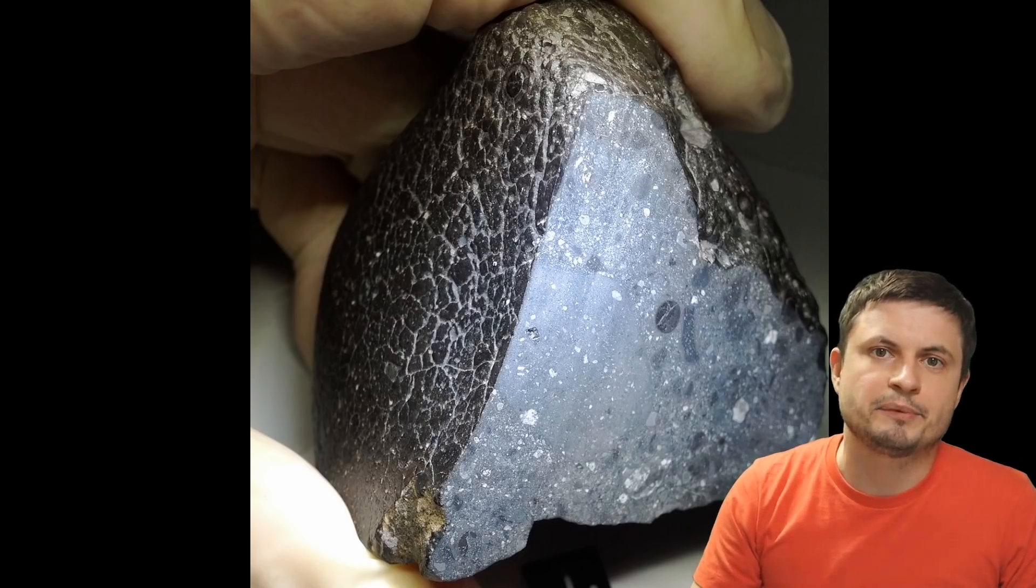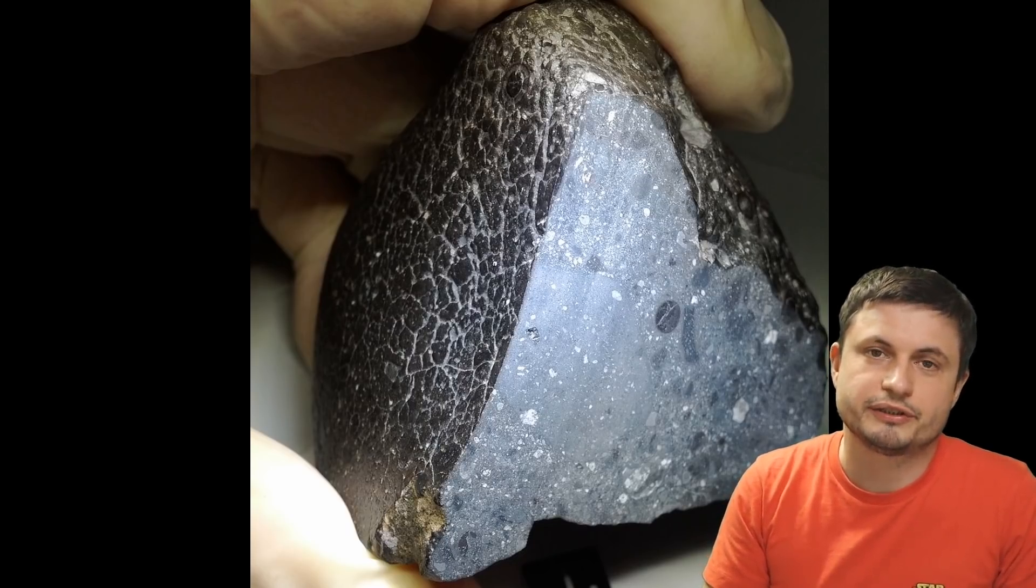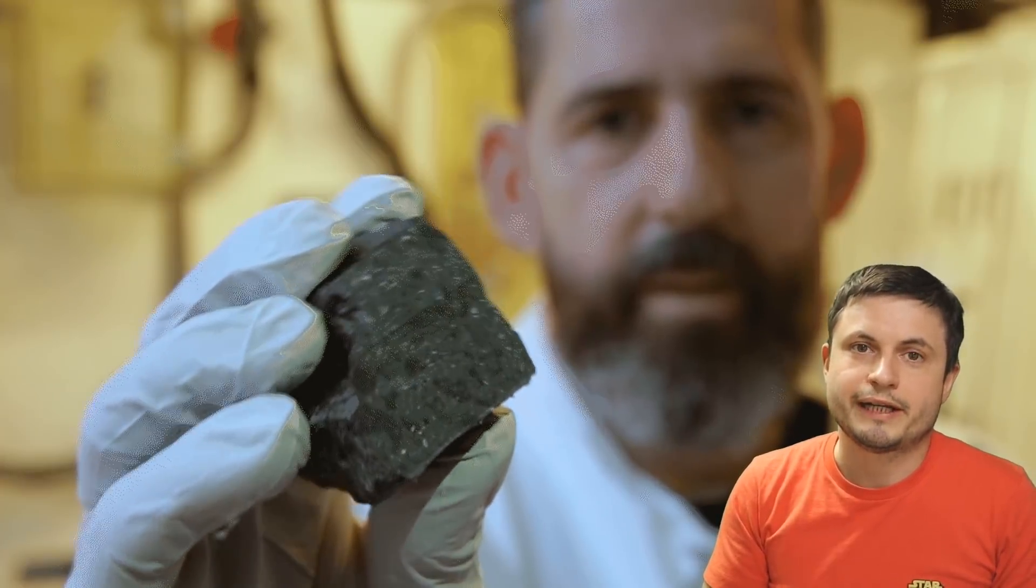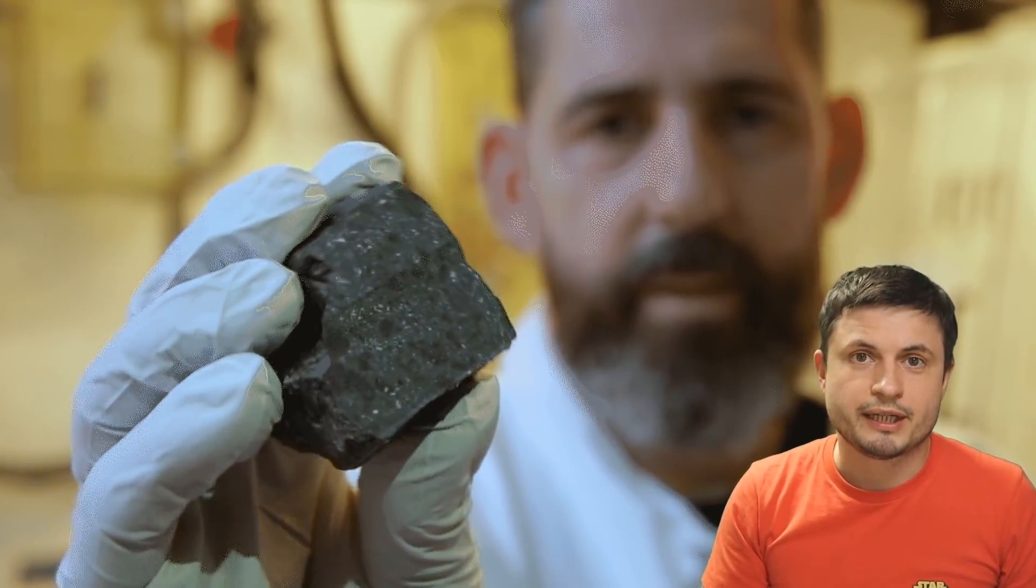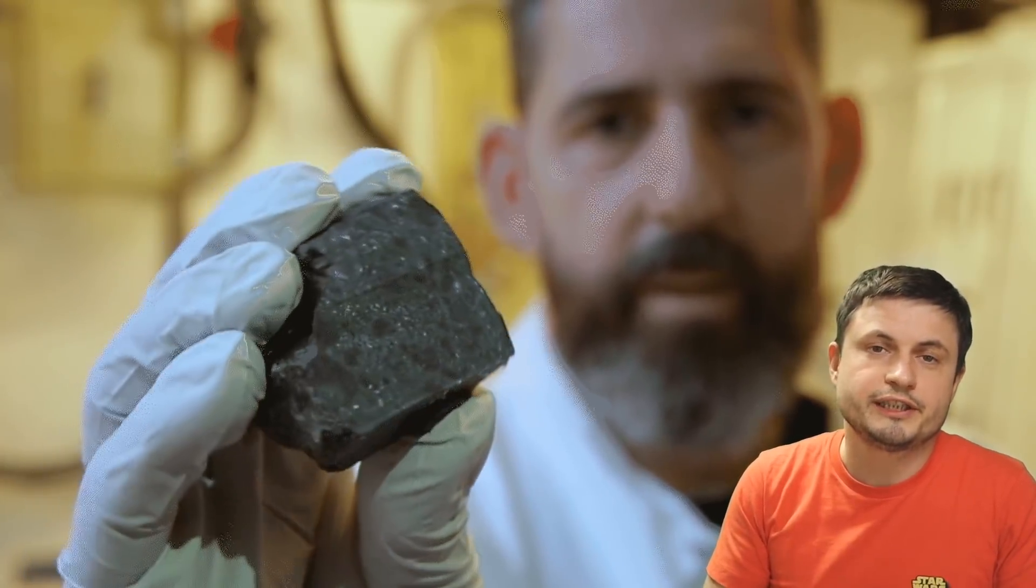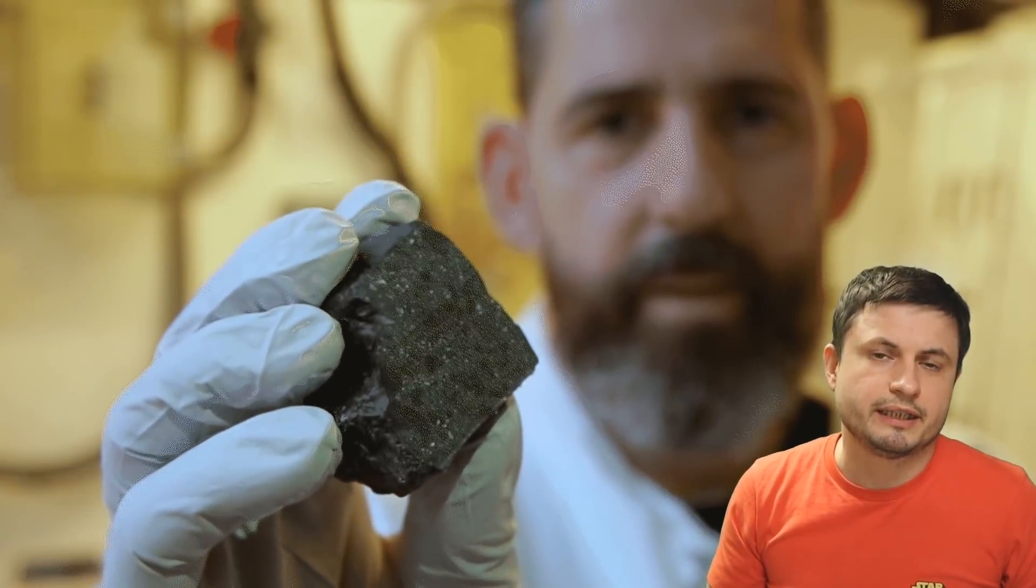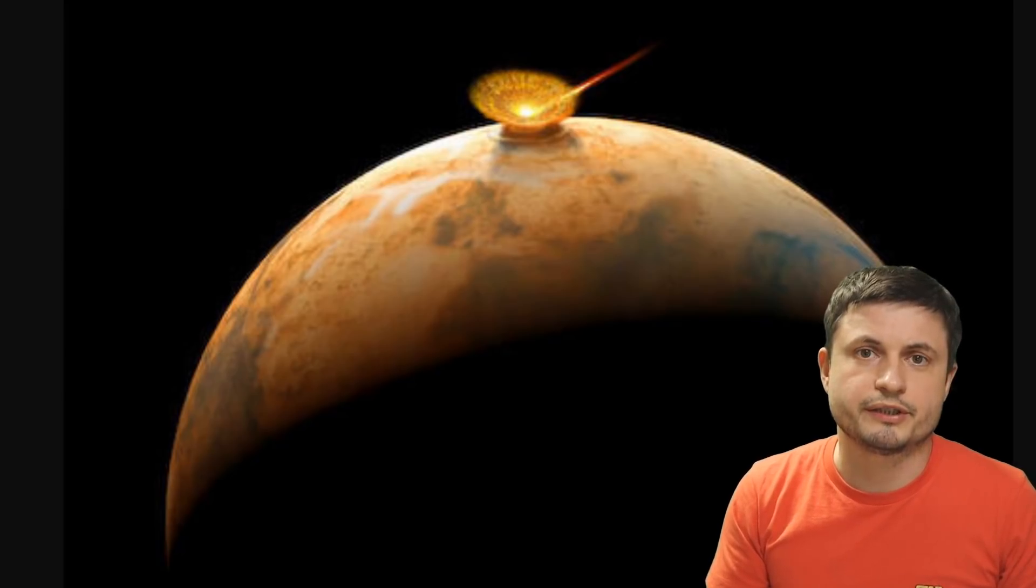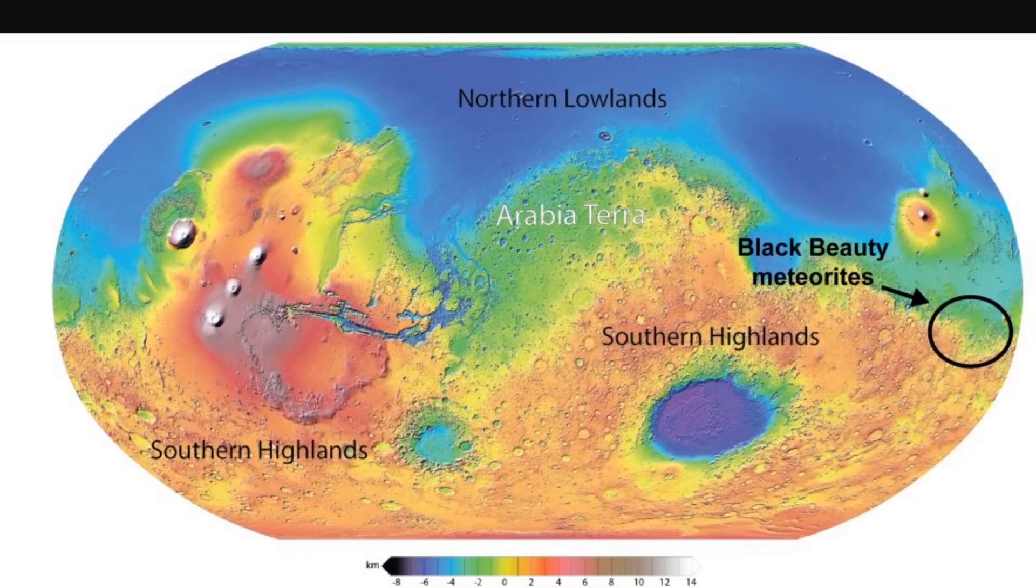Unofficially nicknamed Black Beauty, I guess because it's black and because it's kind of beautiful. This unusual asteroid, as I mentioned, came from Mars and was most likely released from the surface of Mars via an extremely powerful collision. Now obviously we don't know what collided with Mars, but it was a very powerful collision.